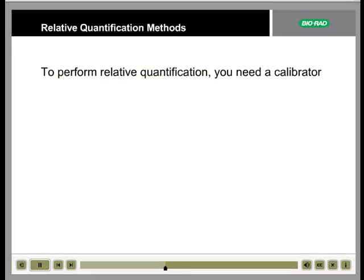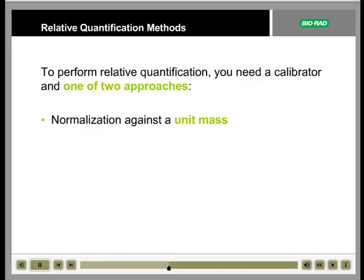Where absolute quantification required a standard template of known concentration, relative quantification requires a calibrator sample. The calibrator sample ensures that the comparison is made between equivalent amounts of starting sample. Two methods are most commonly used for relative quantification: normalization against a reference unit mass, and normalization against a reference gene.